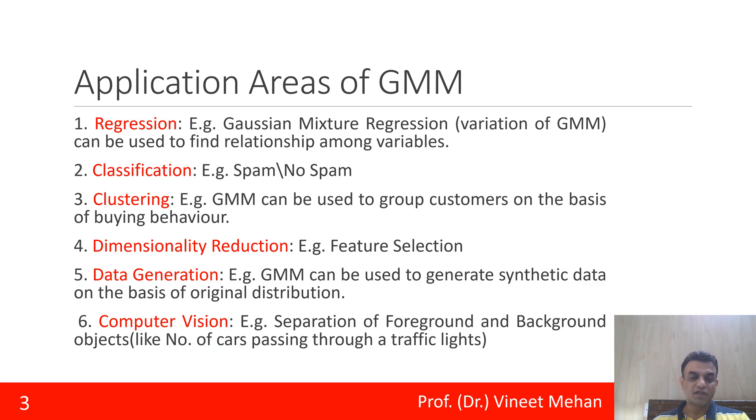Then is computer vision. We can separate the foreground and the background objects in a particular image or in a particular video. Let's say number of cars passing through the traffic lights. Then the car would be the foreground one and the road would be the background one. So such kind of problems are also solved by Gaussian Mixture Model.